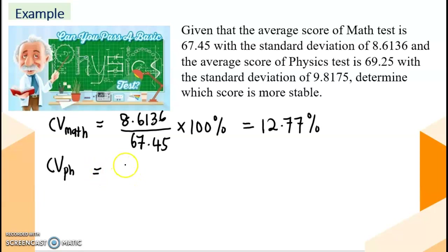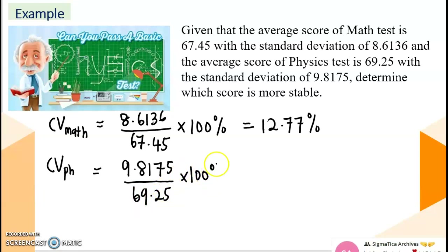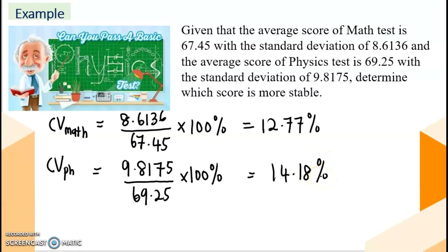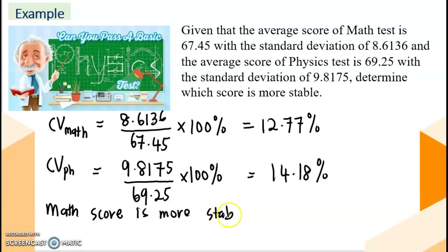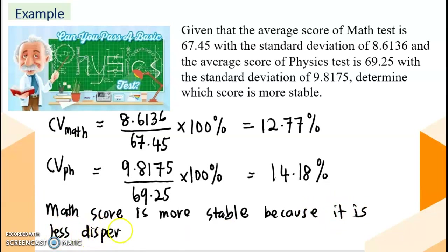Next, we calculate for physics: standard deviation 9.8175 divided by mean 69.25, multiplied by 100%. We get 14.18%. Comparing: math (12.77%) is less than physics (14.18%). So our interpretation is that the math score is more stable, because it is less dispersed compared to the physics score.